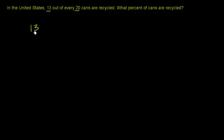So 13 out of every 20 are recycled. So 13 20ths, or 13 over 20, could also be viewed as 13 divided by 20.